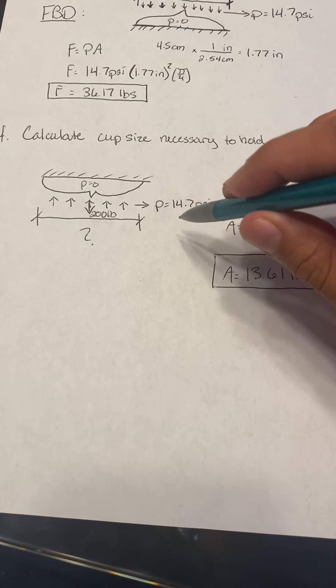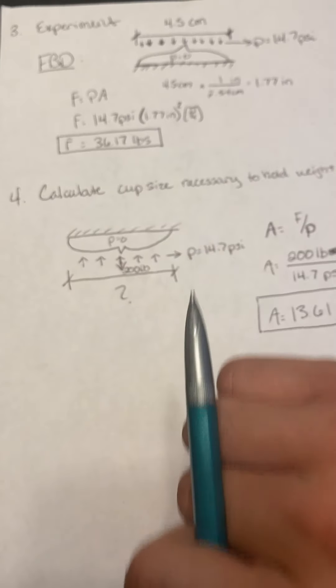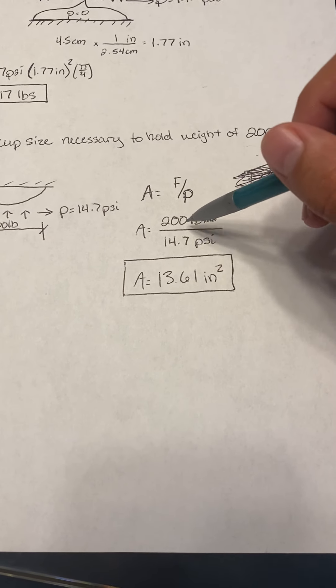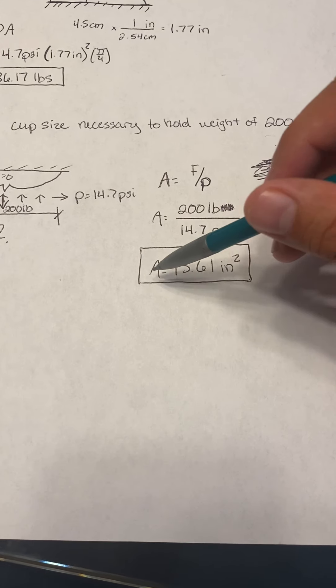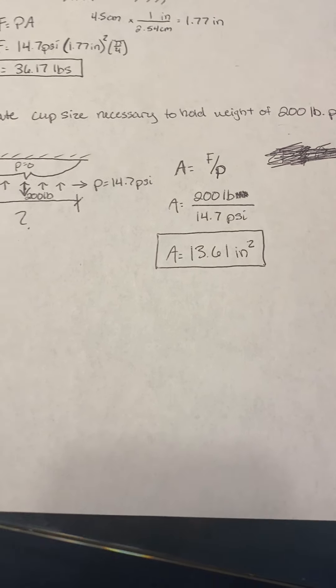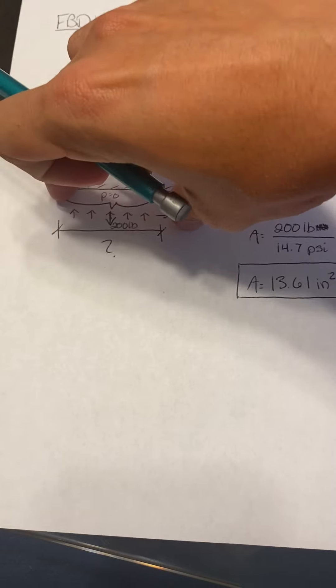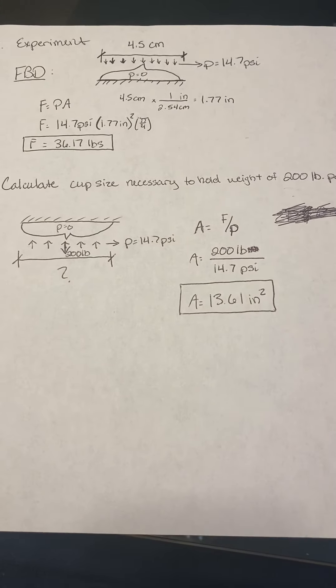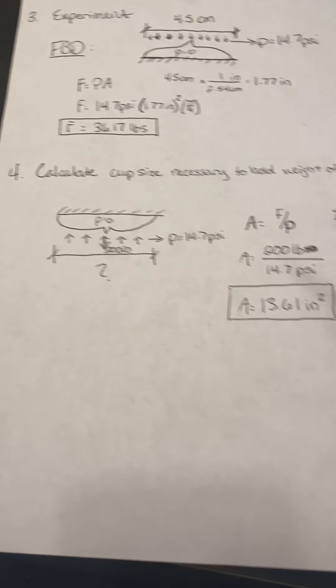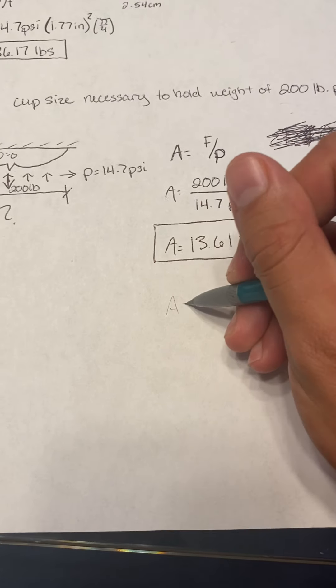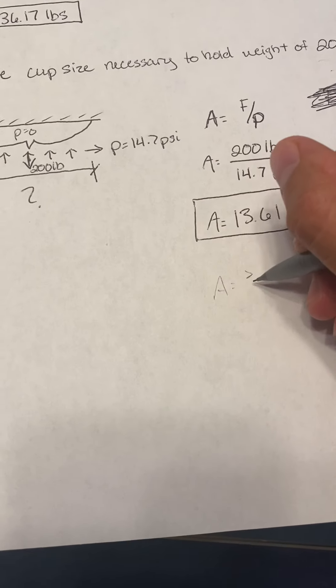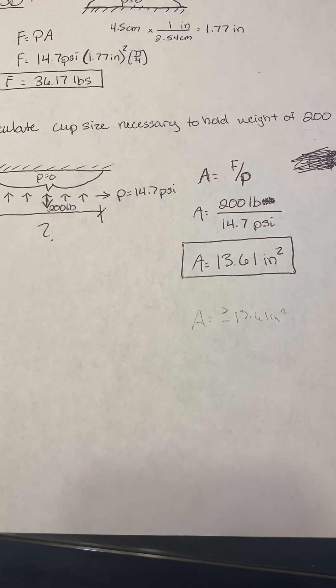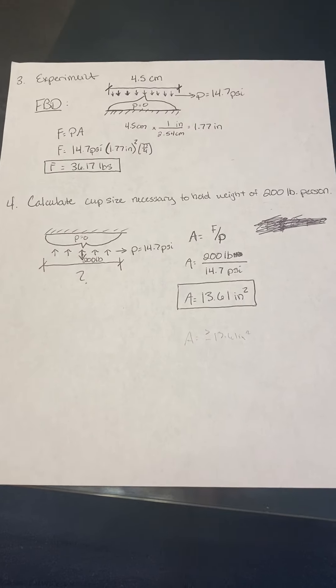That's the force, and then we have the pressure acting against the suction cup. So plug and chug: area equals force over pressure. We got 200 pounds over 14.7 psi, and I got 13.61 inches squared. That's how big you need the suction cup to be in order to hold that 200 pound person. The area's got to be greater than or equal to 13.61 inches squared. That's the recovery for the exam.